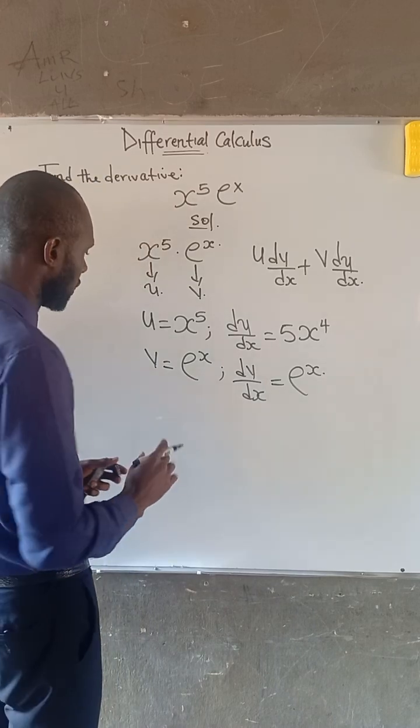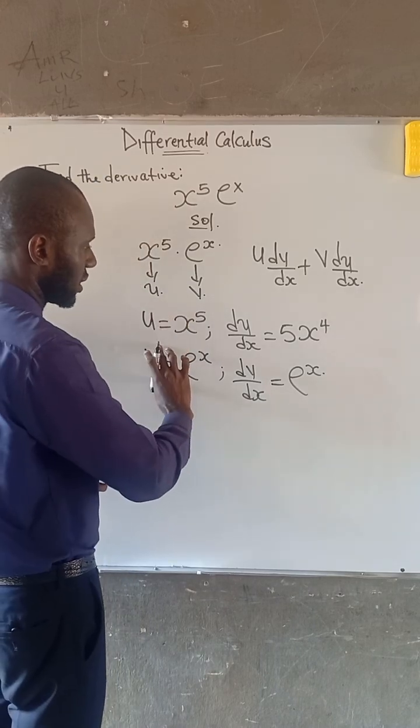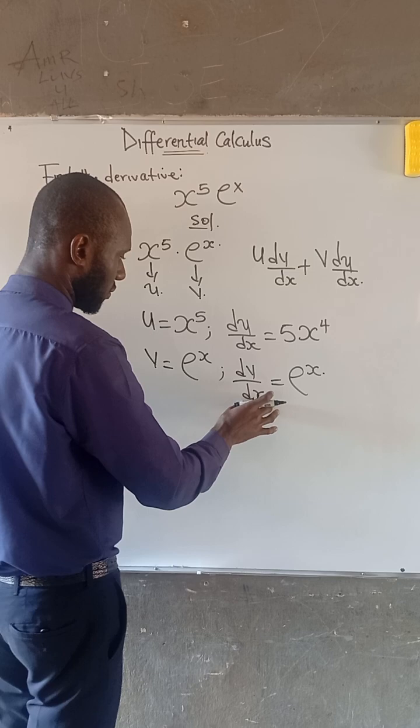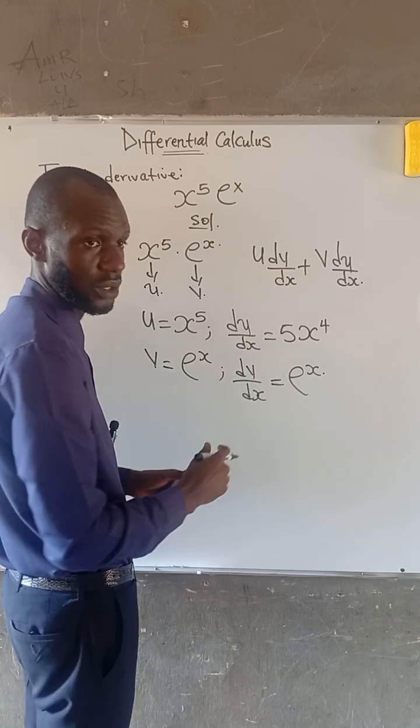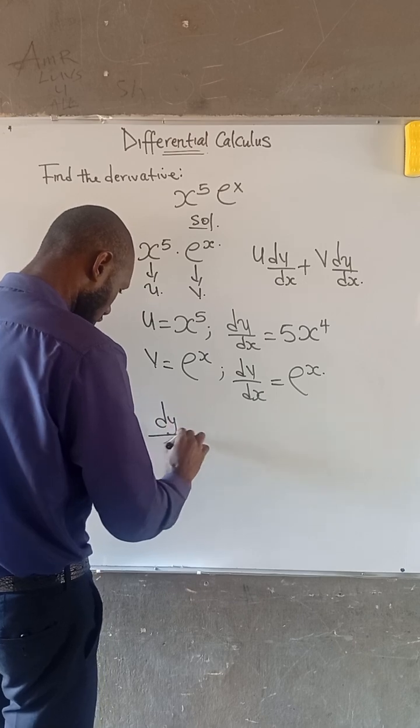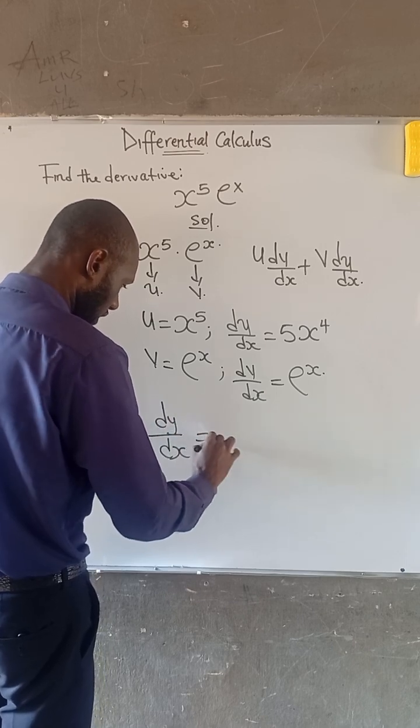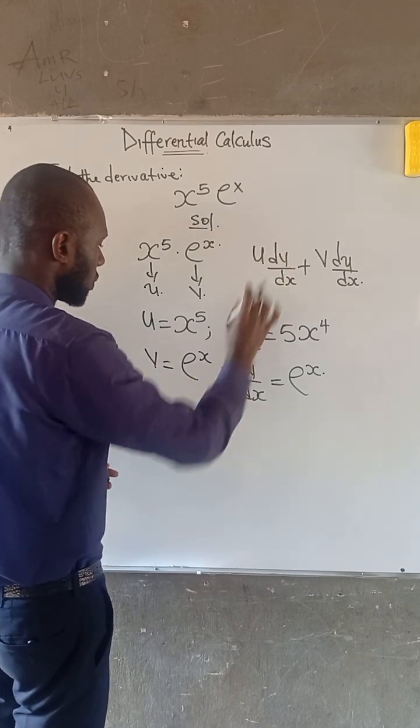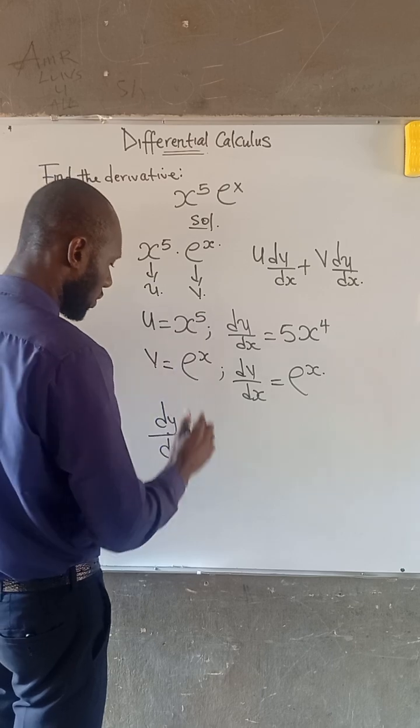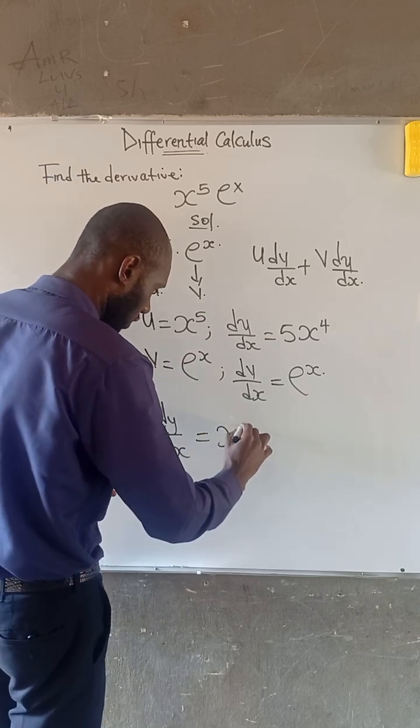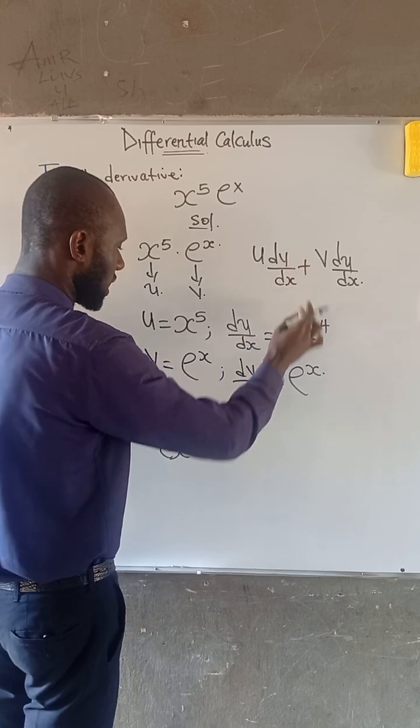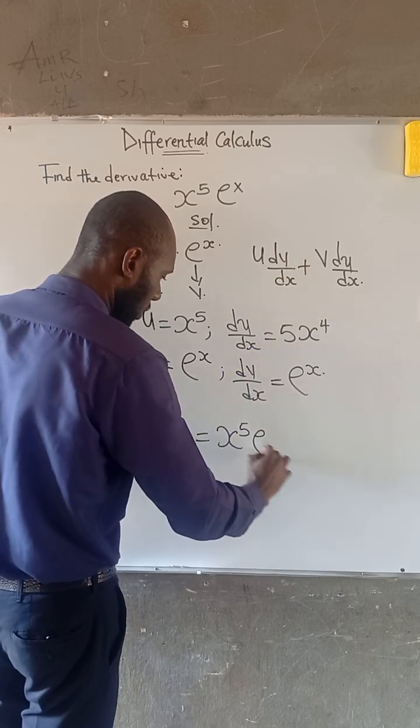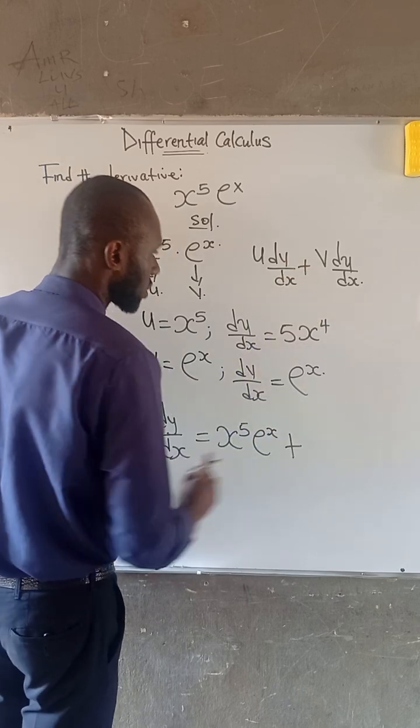We have obtained u, v, du over dx, and dv over dx. So we substitute into the expression. Therefore, dy over dx is equal to our u, which is giving us x to the power of 5, multiplied by dv over dx, which is e to the power of x, plus